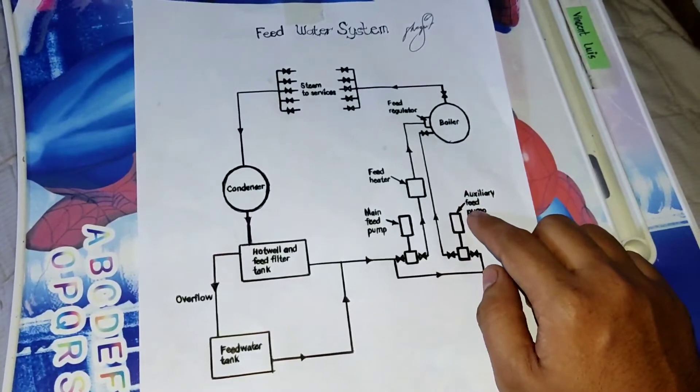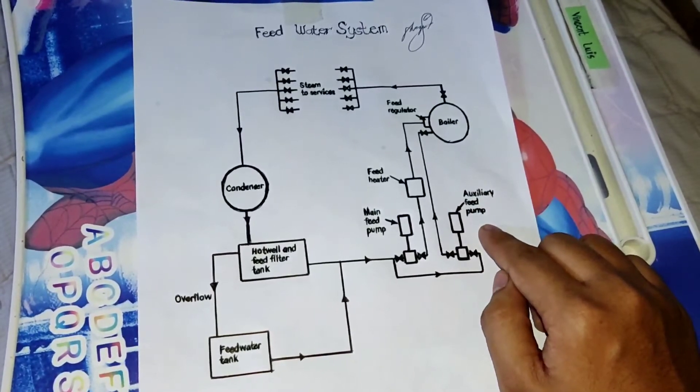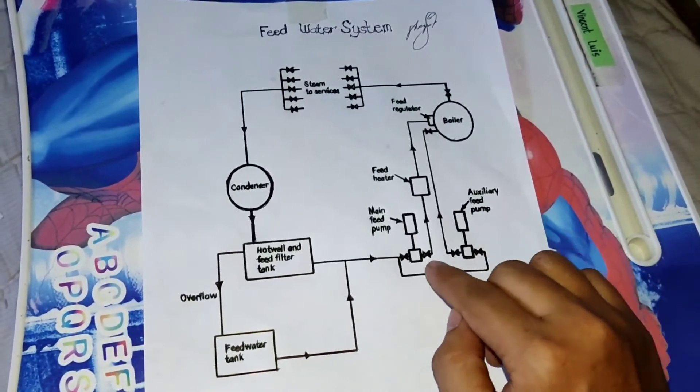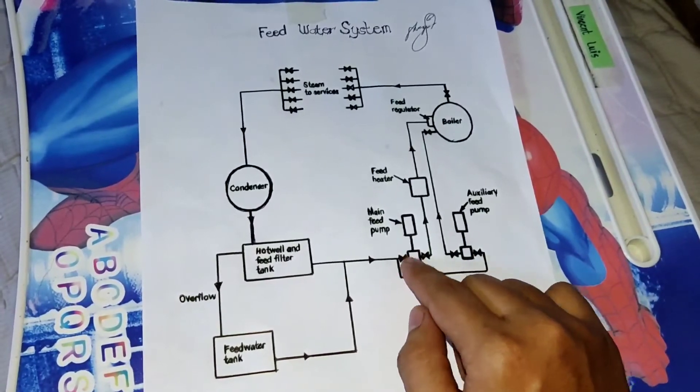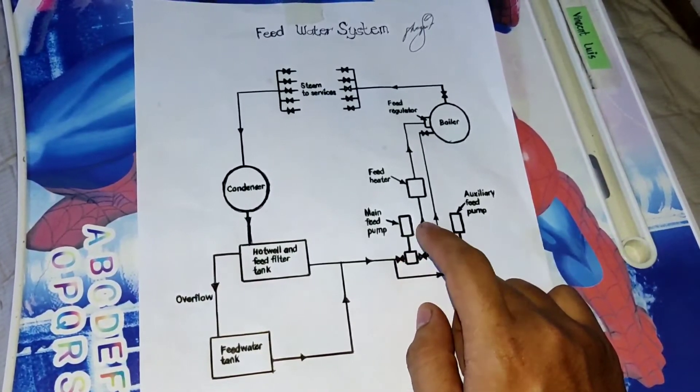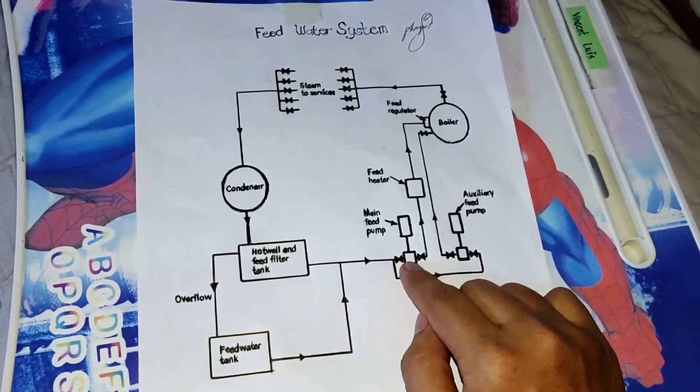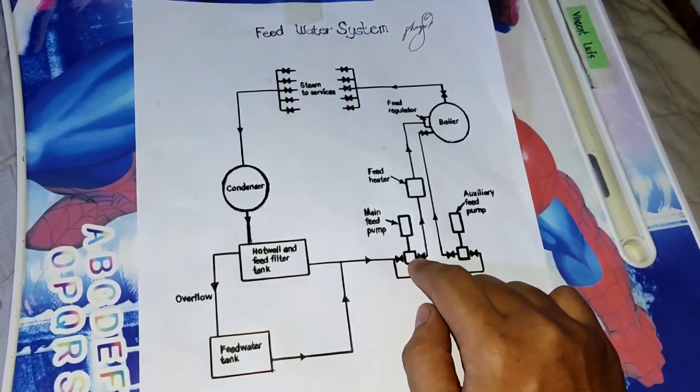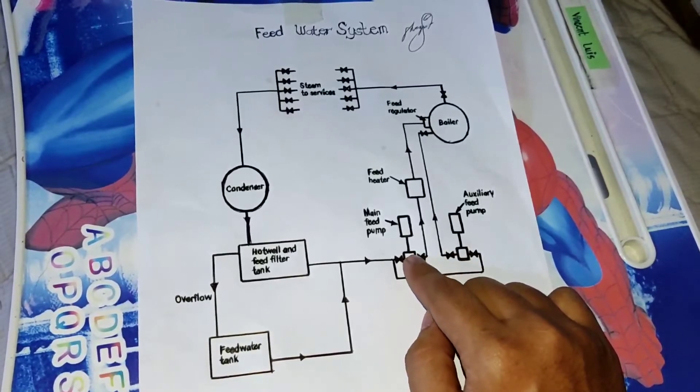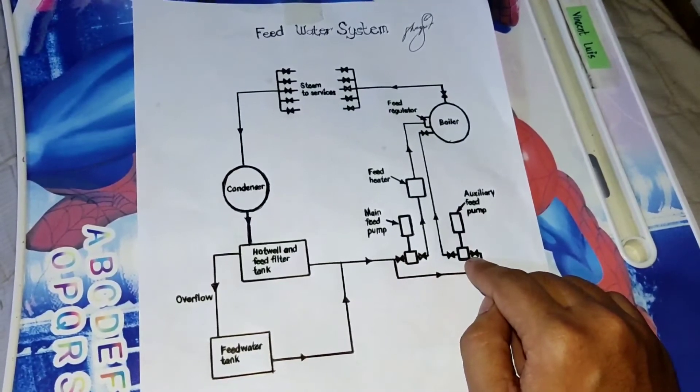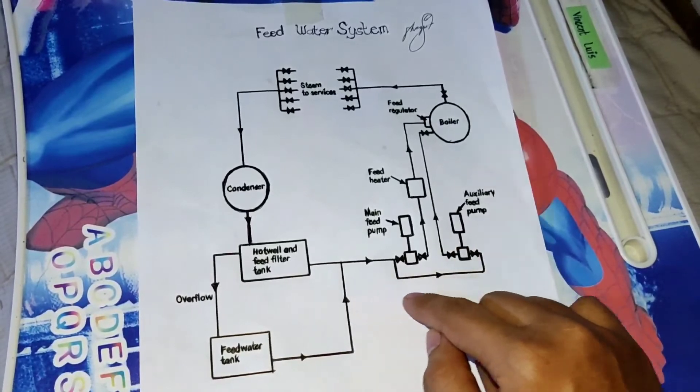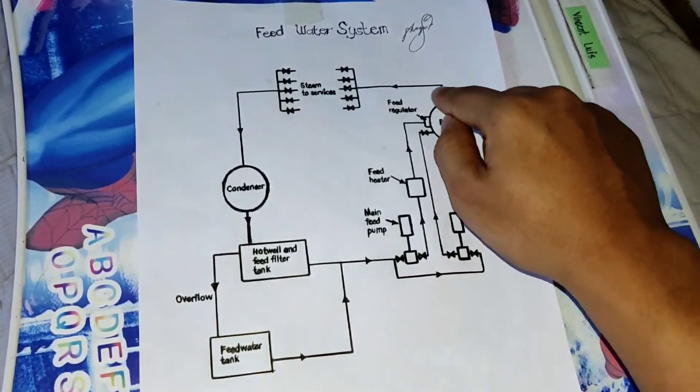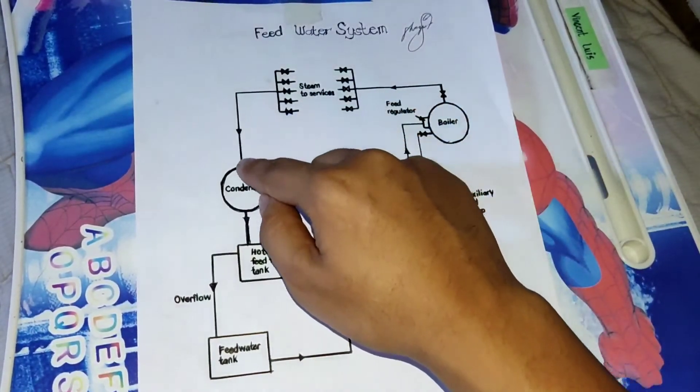We have here the auxiliary feed pump. This serves as a backup pump. In case of emergency, the main feed pump is having trouble, you can automatically close or shut off this pump and use the auxiliary feed pump to continue the process of generating steam.